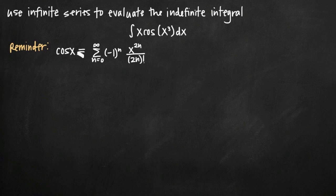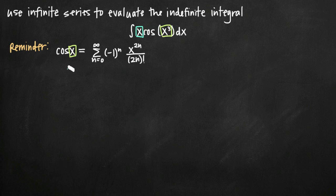The first thing we need to notice is that this formula for cosine of x expressed as an infinite series is just cosine of simple x. In our integral, not only do we have cosine of x cubed — not just x but x cubed — but we also have this additional x multiplied by the cosine. So our function is different in two ways from this formula. We'll first deal with the x cubed, then go back and deal with the x.